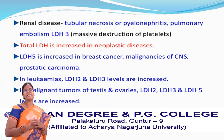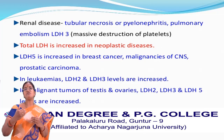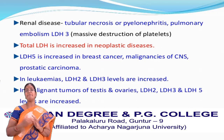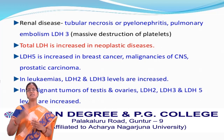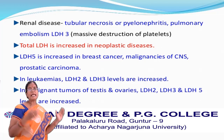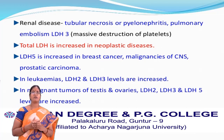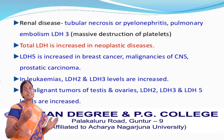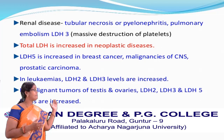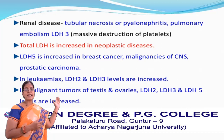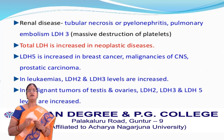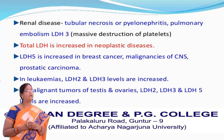During renal diseases, LDH2 values will be elevated to a great extent. In conditions like tubular necrosis, pyelonephritis, and pulmonary embolism, LDH3 levels will be increased to a great extent. Total LDH values will be increased in neoplastic diseases. LDH5 is increased to a great extent in breast cancer, malignancies of the central nervous system, and in prostatic carcinoma. By seeing LDH5 levels, we can say the person is suffering with carcinoma.